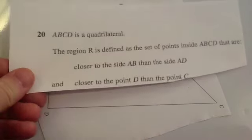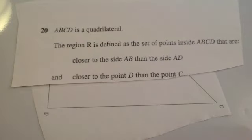The next question: we've got this quadrilateral, and it says ABCD is a quadrilateral. The region R is defined as the set of points inside ABCD that are closer to AB than AD and closer to point D than C.